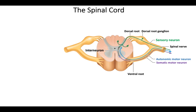The cell bodies are all going to be clustered together in the dorsal root ganglion, which makes that root look like it's kind of swollen. Remember, a synonym of ganglion is swelling, so it makes that dorsal root look a little bit swollen.